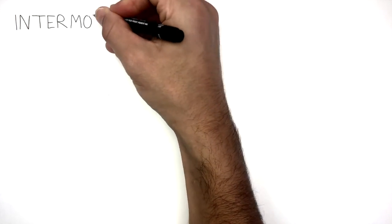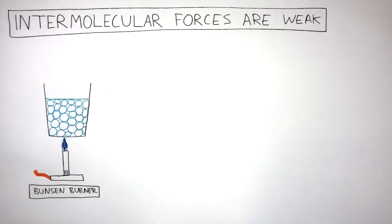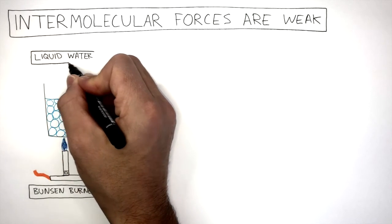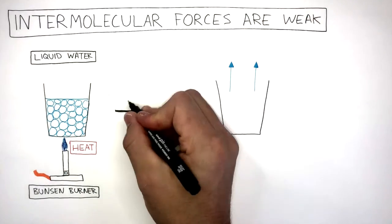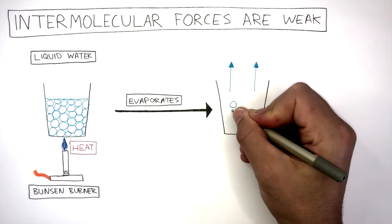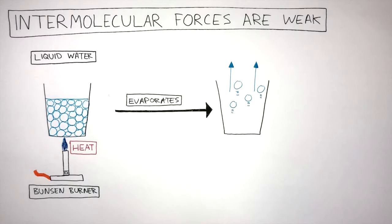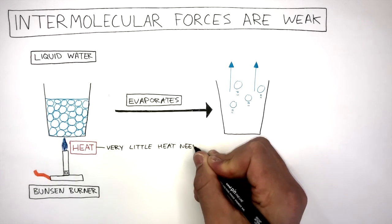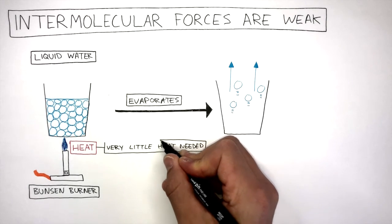We now know intermolecular forces are weak. In this diagram, a Bunsen burner is heating liquid water. The blue circles represent water molecules. The heat causes the liquid water to evaporate into water vapor. The weak forces of attraction that were holding the water molecules together were broken by the heat, allowing the water molecules to rise up. Very little heat is needed to break these weak intermolecular forces between the molecules.